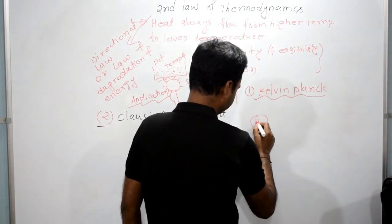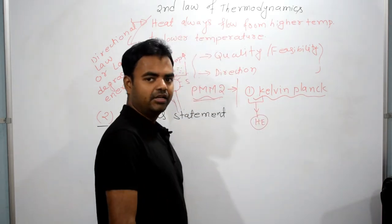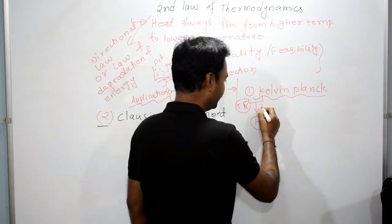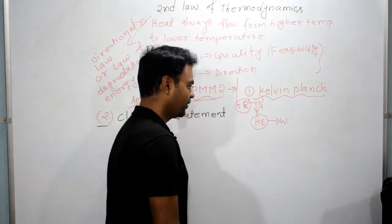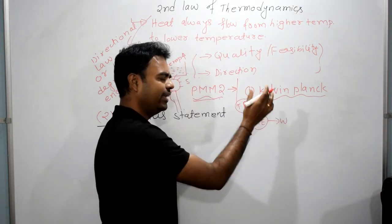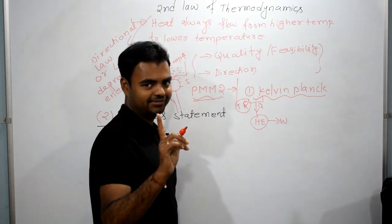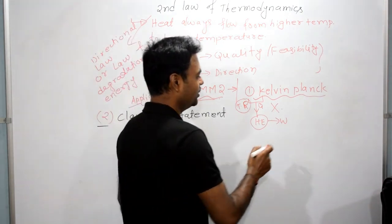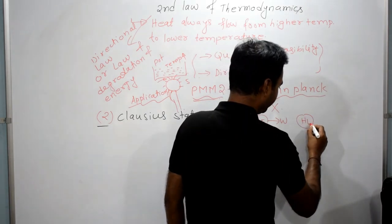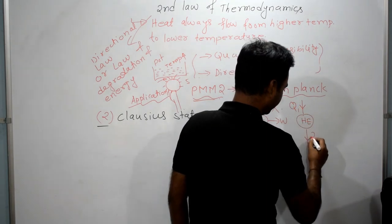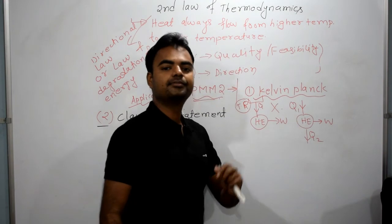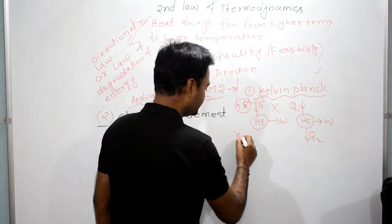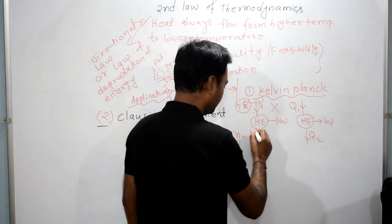Suppose we have a heat engine and we give it some input from a thermal reservoir. The Kelvin-Planck statement says that no engine can interact with only one reservoir — meaning taking heat input and producing 100% work output from a single reservoir is impossible. What is possible is: a heat engine takes heat input Q1, rejects Q2, and produces work output W. This is the valid heat engine cycle.